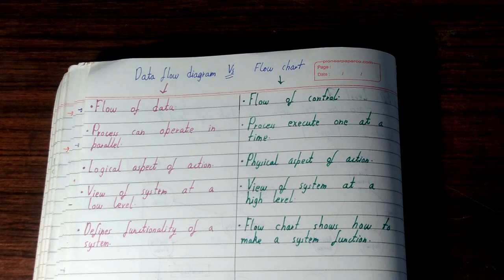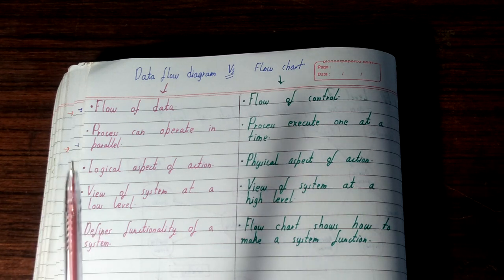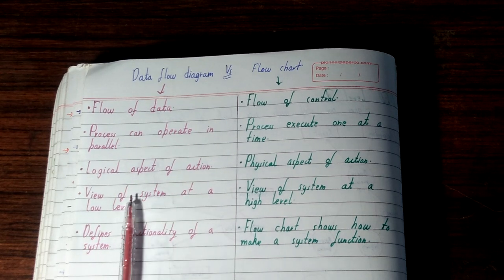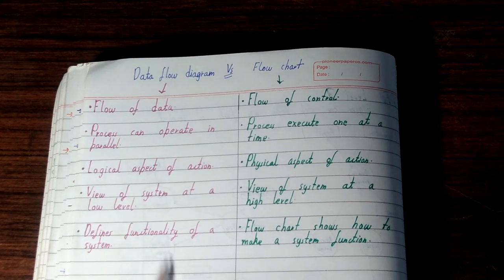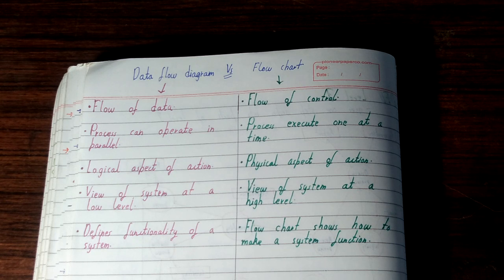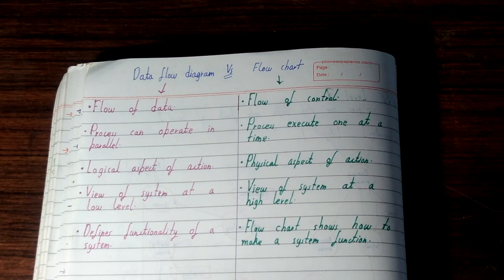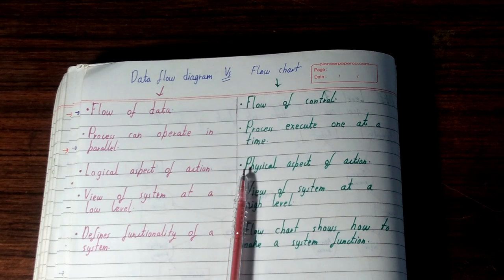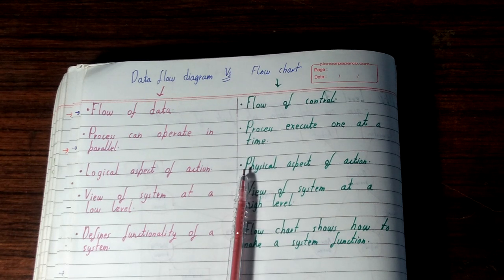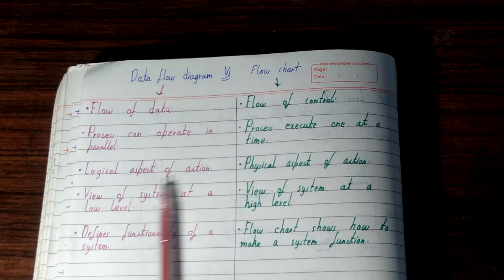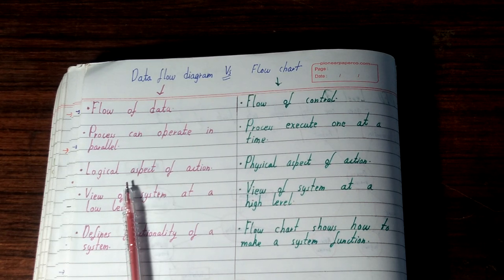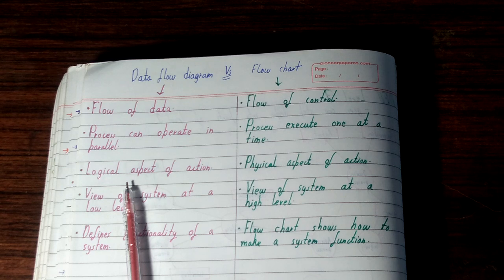If you talk about data flow diagram, it only explains the logical aspect of action. It only explains that this action can be carried out in this particular system, but it does not show how the system will be working. In case of flow chart, it shows the physical aspect of action - if you come to that particular action, what will happen, where you will go. But in data flow diagram, all the actions will be there but it's not told what will happen if you come to this.